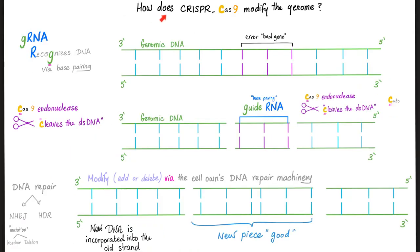So here is the story — how CRISPR-Cas9 modifies the genome. This is your DNA; it has a bad area, a bad gene. First, we would like to recognize the bad area. How do you recognize it? Using the guide RNA — gRNA. How did it recognize? Base pairing.